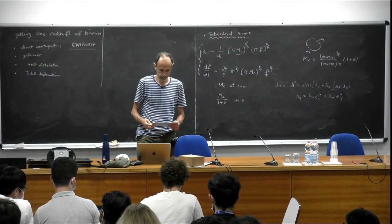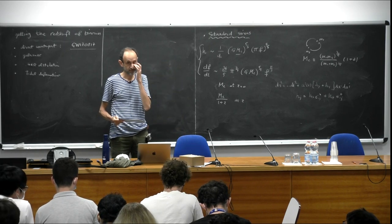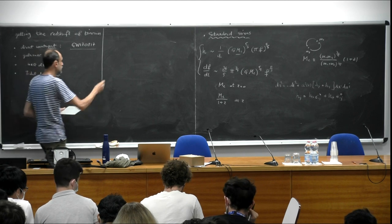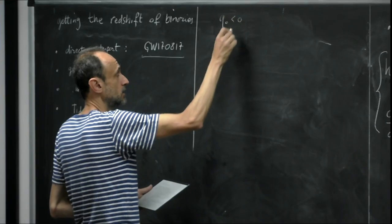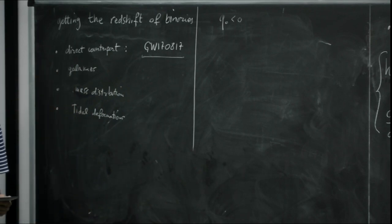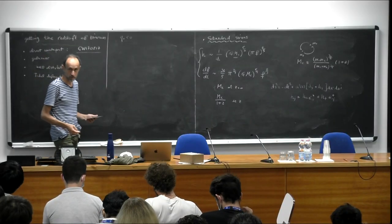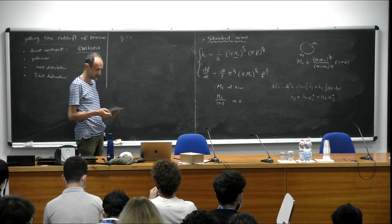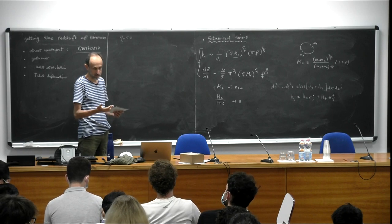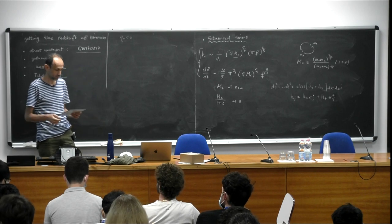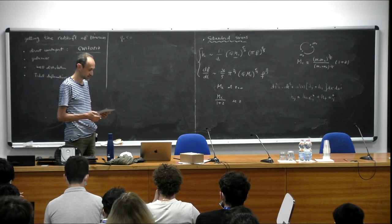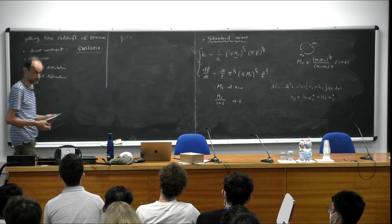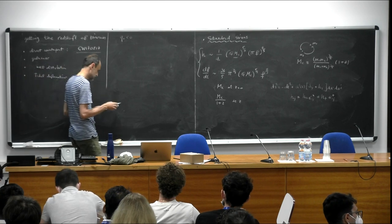Sorry for the delay — some technical problem. So we have the second lecture by Filippo Vernizzi. I forgot to mention something when I talked about the discovery of acceleration: it was done in 1998. There were two groups fighting for this measurement — the Supernova Cosmology Project and the High-Z Supernova Research Team. Perlmutter led the Supernova Cosmology Project, and Adam Riess and Brian Schmidt led the High-Z team. They got the Nobel Prize in 2011.